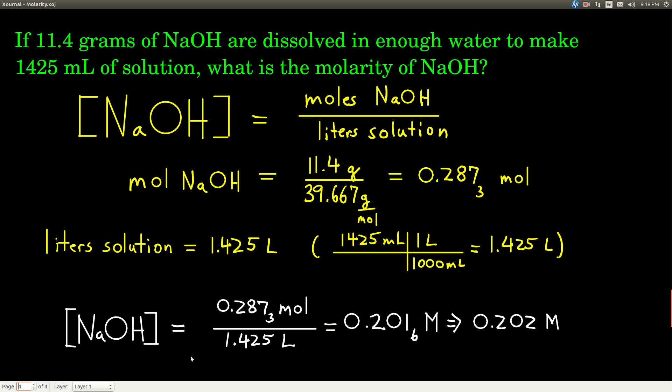We find that the concentration, we would say the molarity of sodium hydroxide is equal to 0.202 molar. That's how we say the M, molar, meaning moles per liter. Moles of solute per liters of solution. So we know that for every one liter of this solution, we have 0.202 moles of sodium hydroxide dissolved in it.